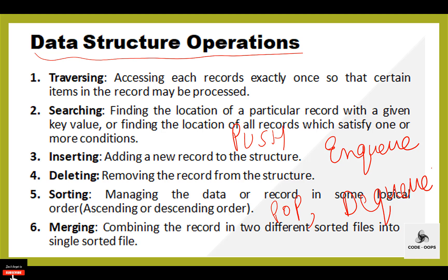The next operation is sorting. Sorting means arranging data in a particular order — ascending or descending order. There are different sorting algorithms available, like bubble sort. The last operation performed on a data structure is merging. Merging means combining data of two different sorted orders into a specific order, maybe ascending or descending. We can also use merge sort for this operation.